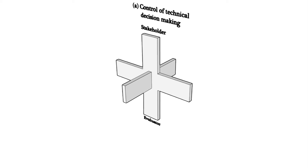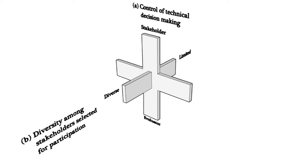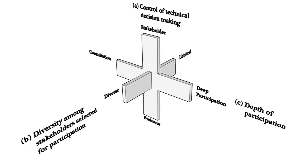The first dimension has to do with technical decision-making and the control over it — is it the evaluators on the one hand or the stakeholders on the other? The next has to do with diversity among the stakeholders involved: is it a large, diverse group or is it a narrow, well-defined group? And finally, we have depth of participation: to what extent are stakeholders involved in actually doing the evaluation? Is it shallow involvement or is it really deep involvement?